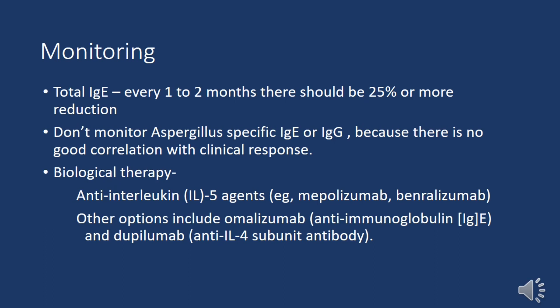Monitoring patients with ABPA is essential to ensure optimal management. Total IgE levels serve as a key parameter for monitoring treatment response and should be measured every one to two months, aiming for a reduction of 25 percent or more from baseline. Monitoring of aspergillus-specific IgE or IgG is not recommended, as there is limited correlation with clinical response.